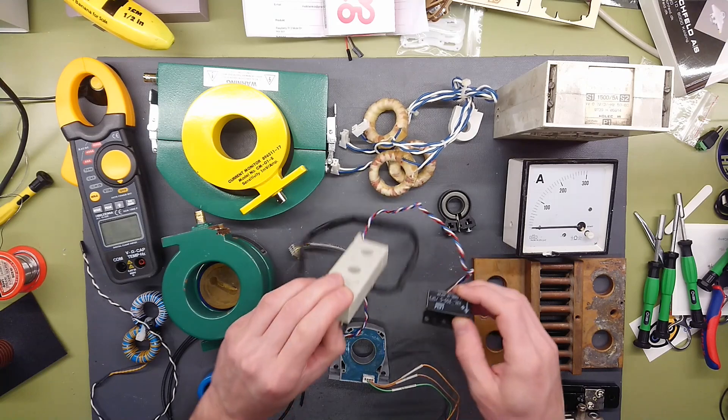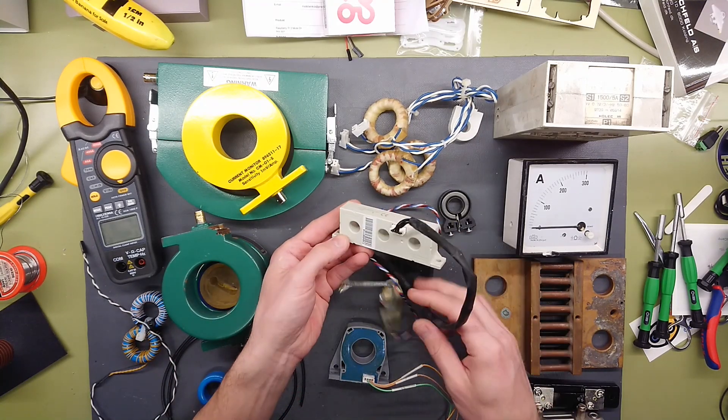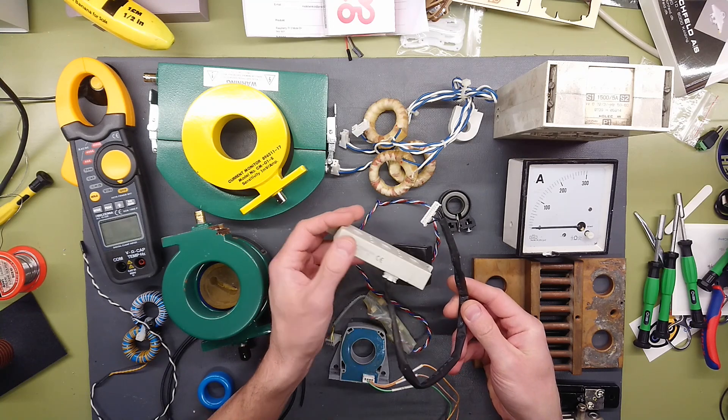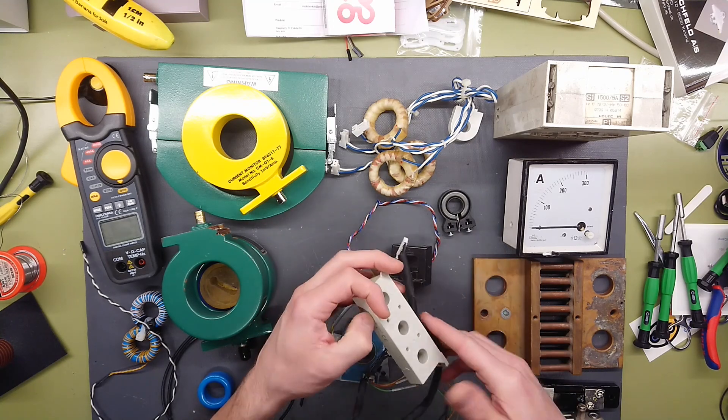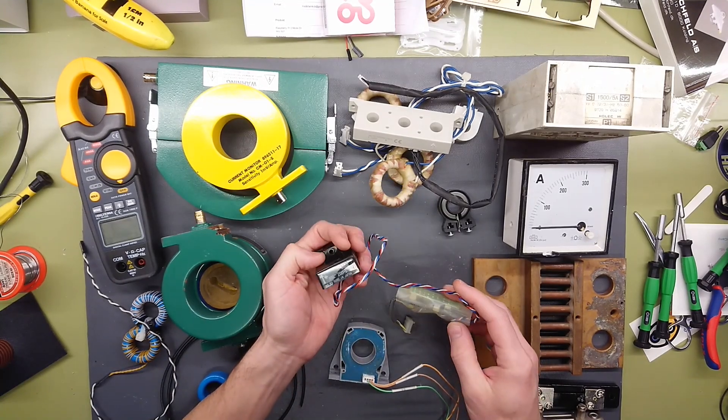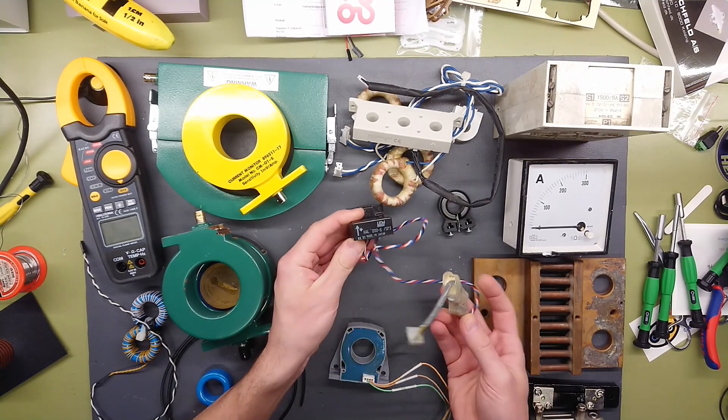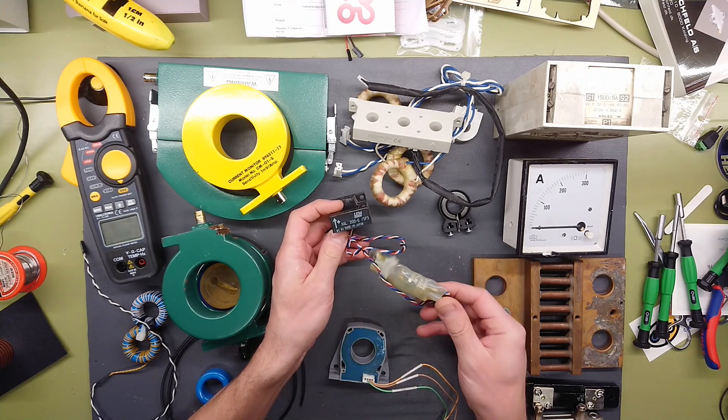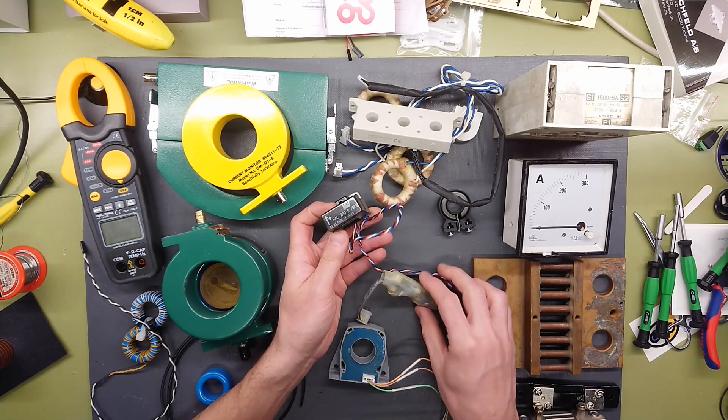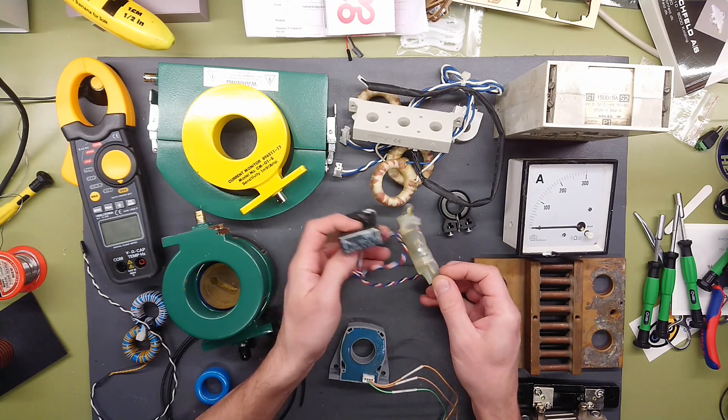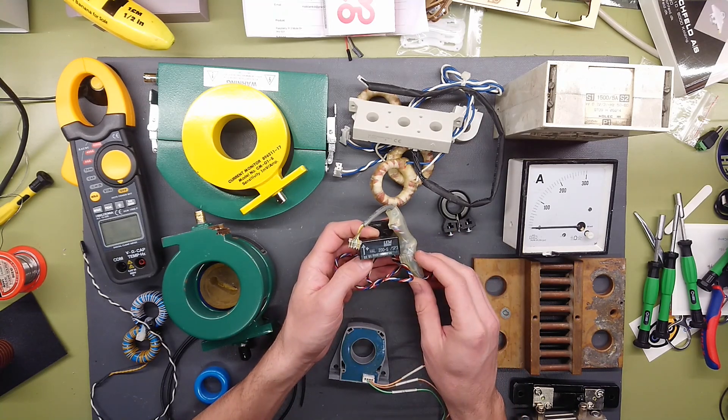Now this comes in all kinds of packages. Here's a three-phase version where it just comes out with a supply and the three signals and some common signal, common ground. You find these LEM sensors almost everywhere you see power electronics. Now this one comes with a small power supply circuit sitting on it so it's probably giving out something like 0 to 10 volt according to the 200 amp rating.